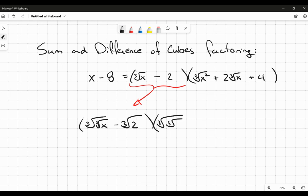So this would be the cube root of x squared. And this would be plus the cube root of 2 multiplied by the cube root of the cube root of x. And then we would have the cube root of 4 when we finish it off here.